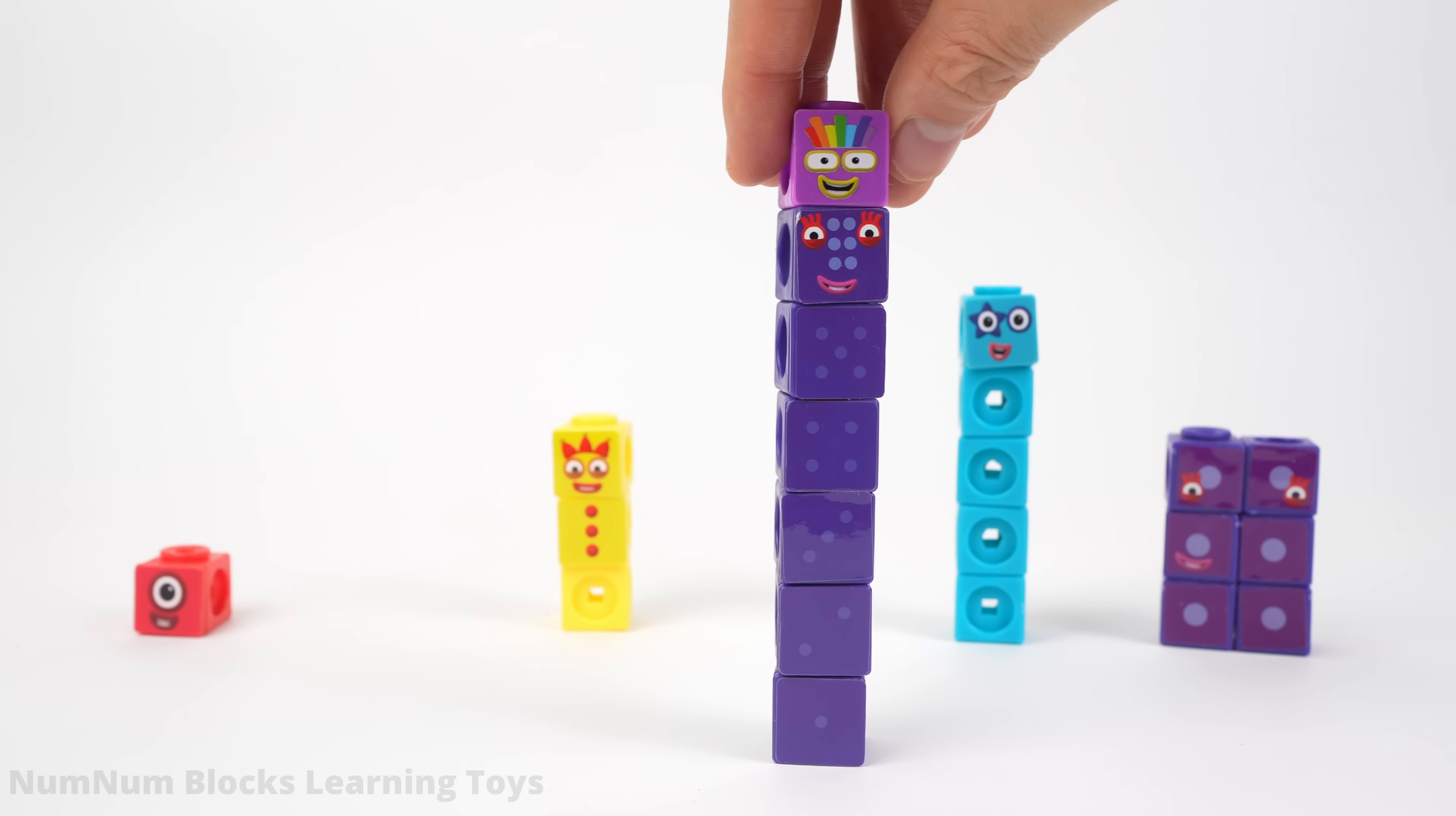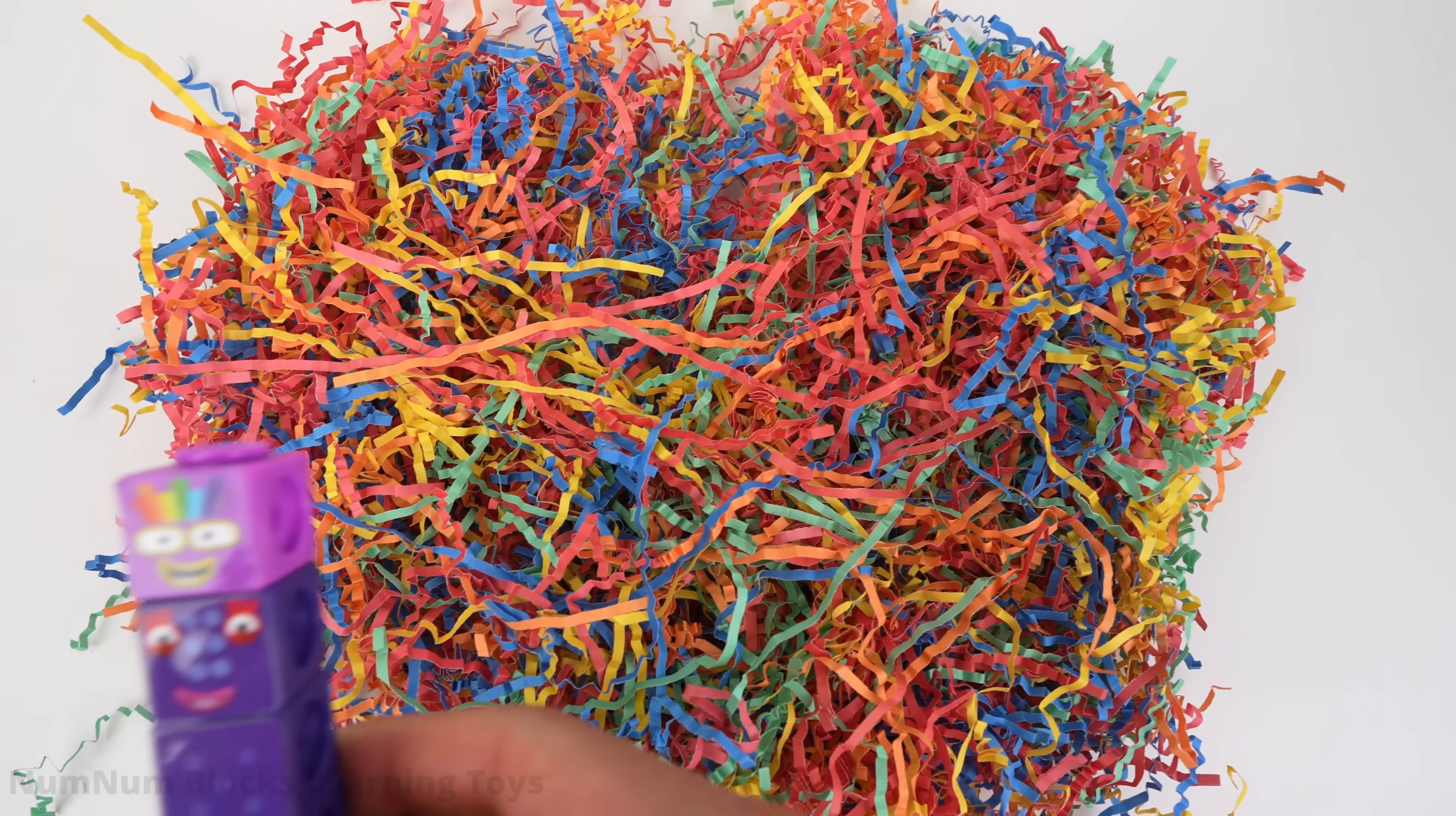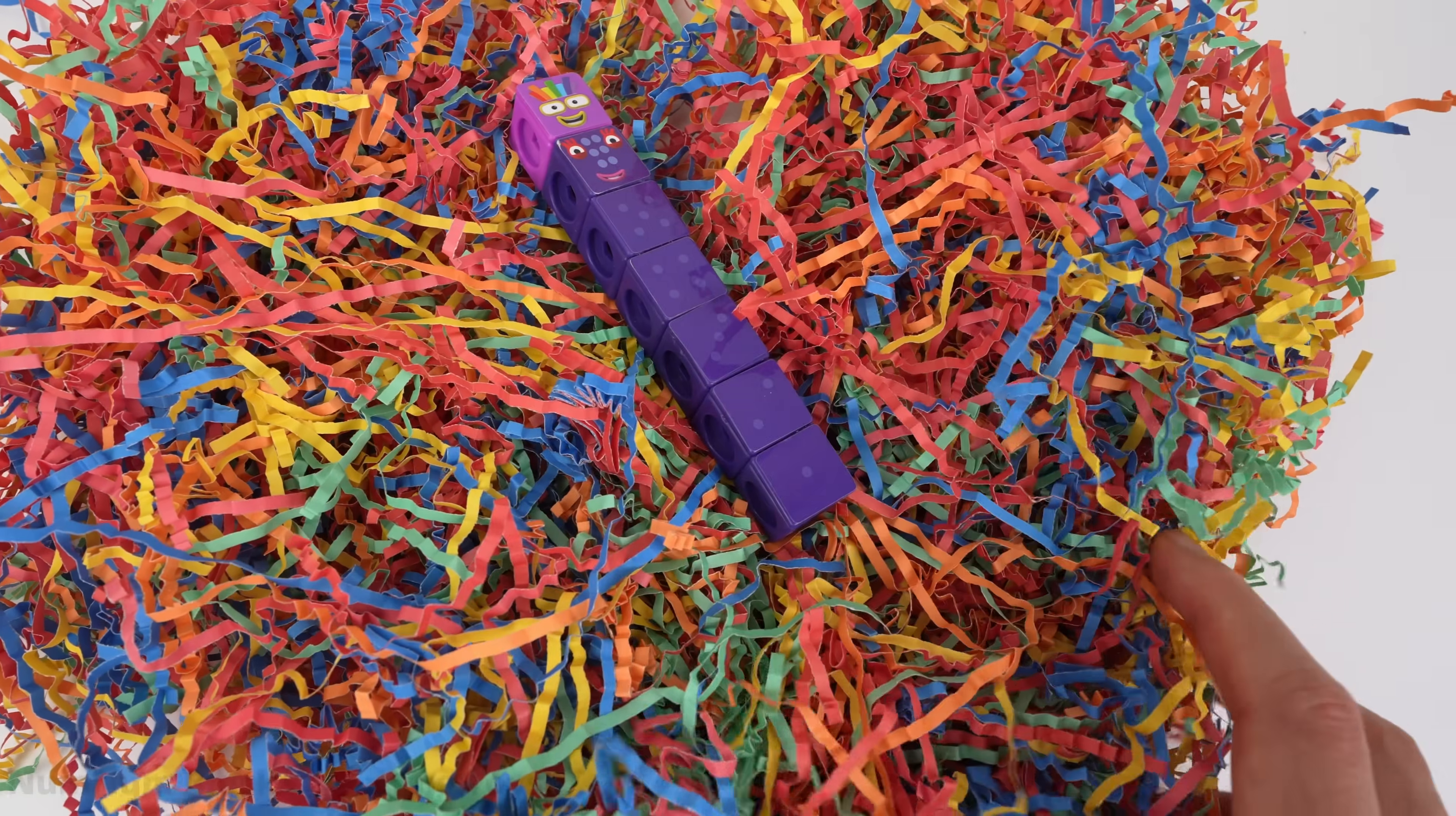Let's change the six indigo blocks into the colors of the rainbow. Let's use the rainbow paper and cover six to get the right colors for seven's body.